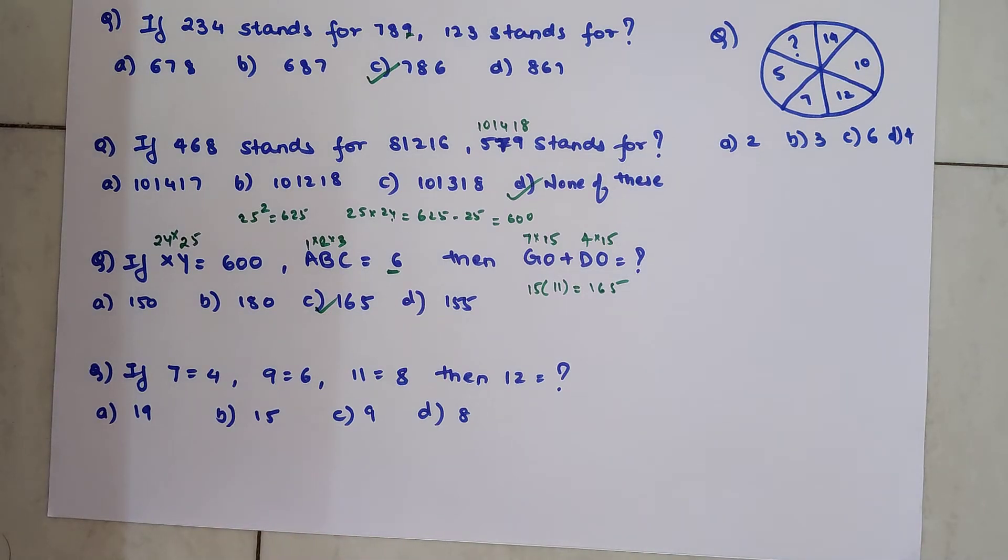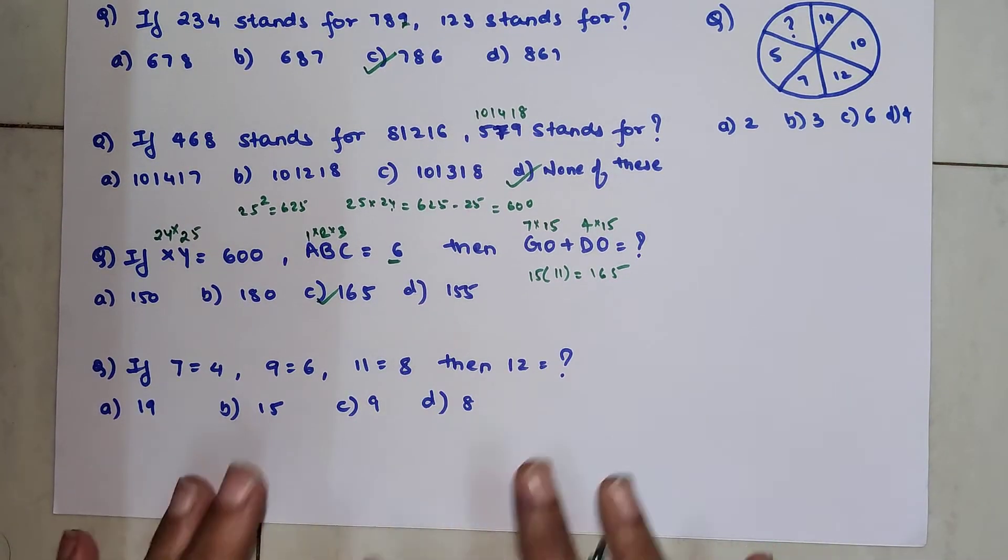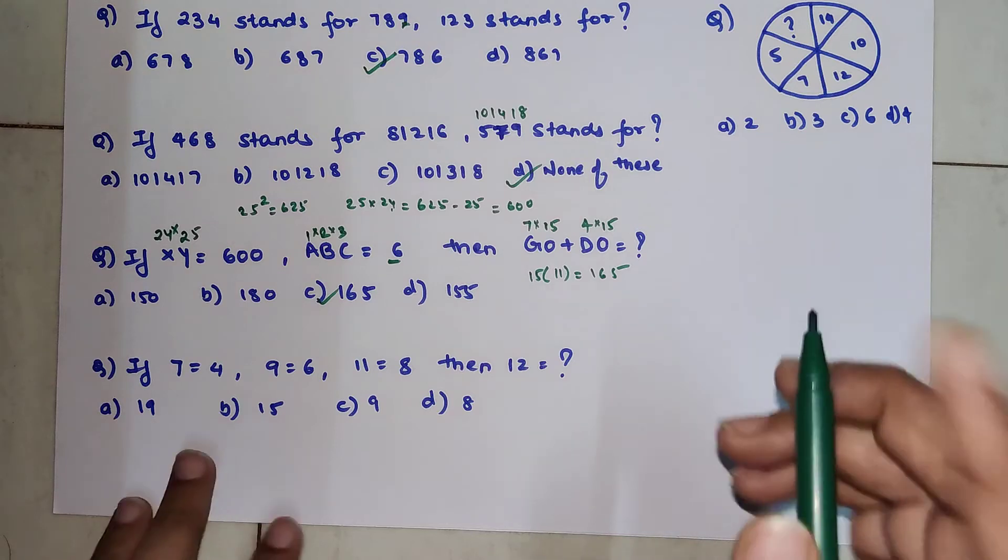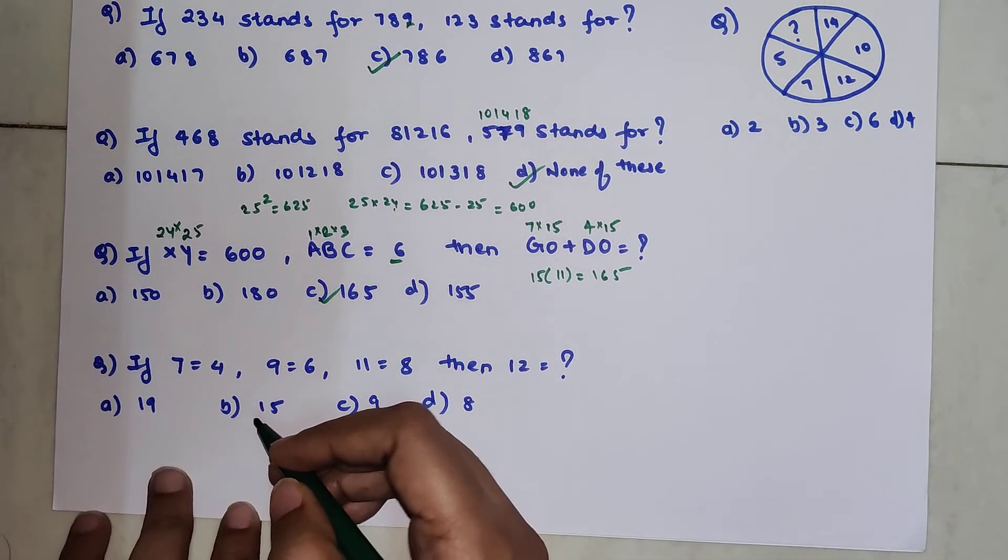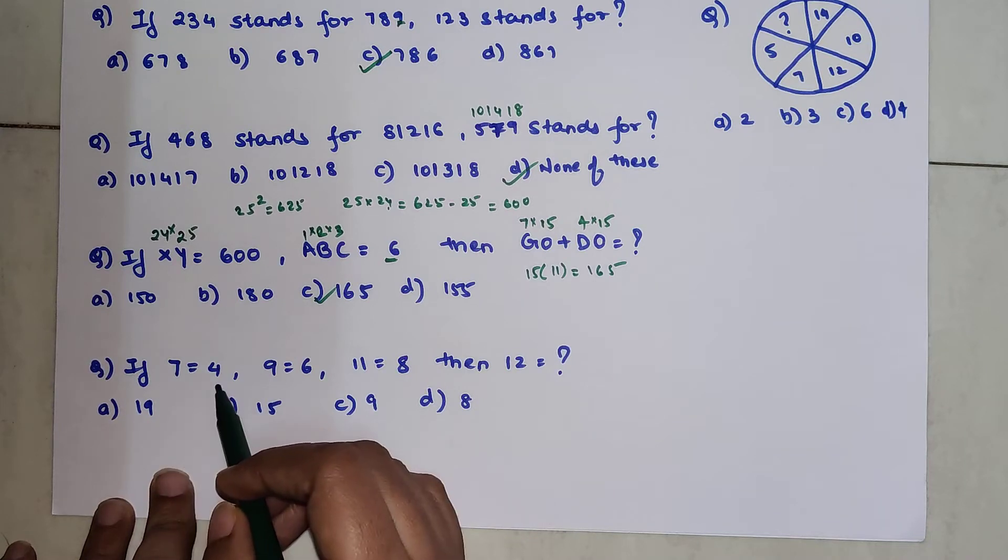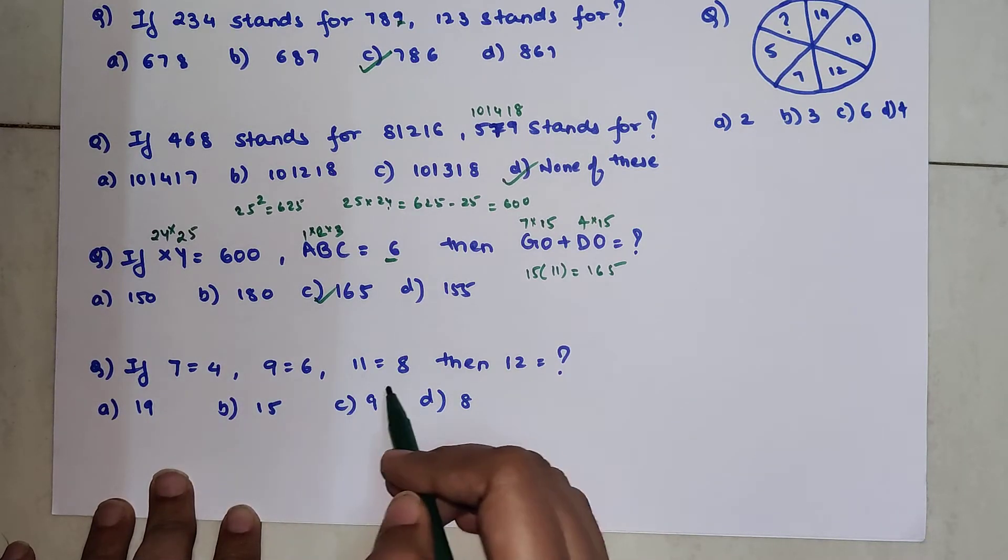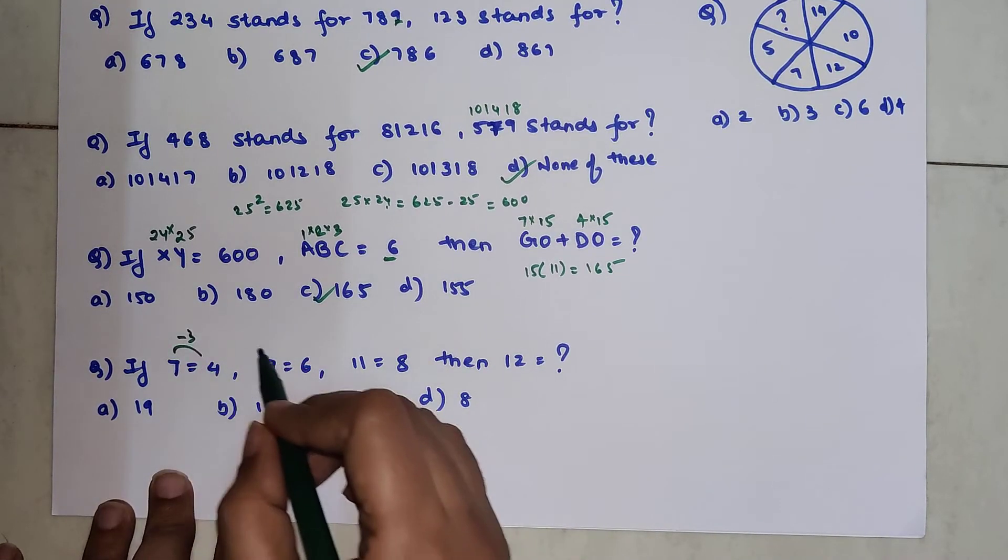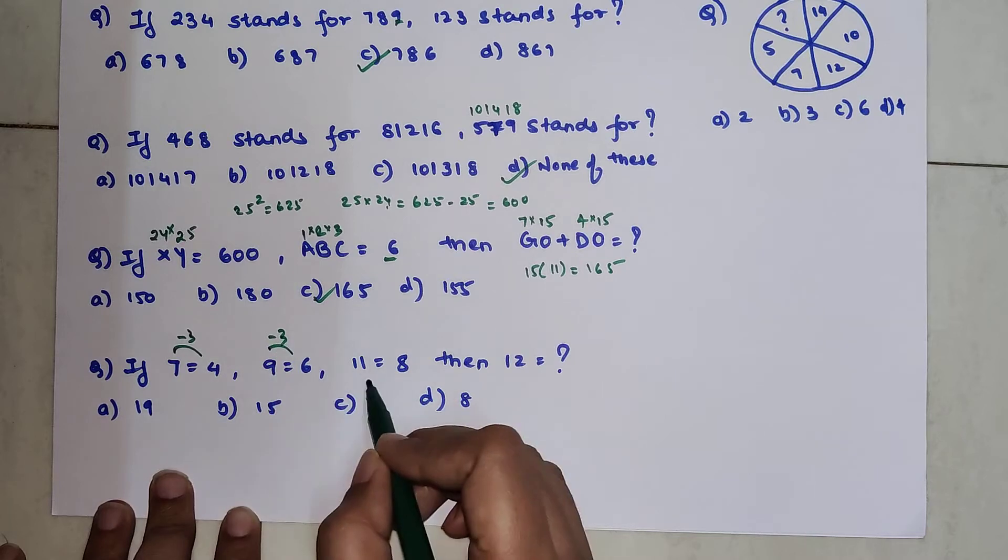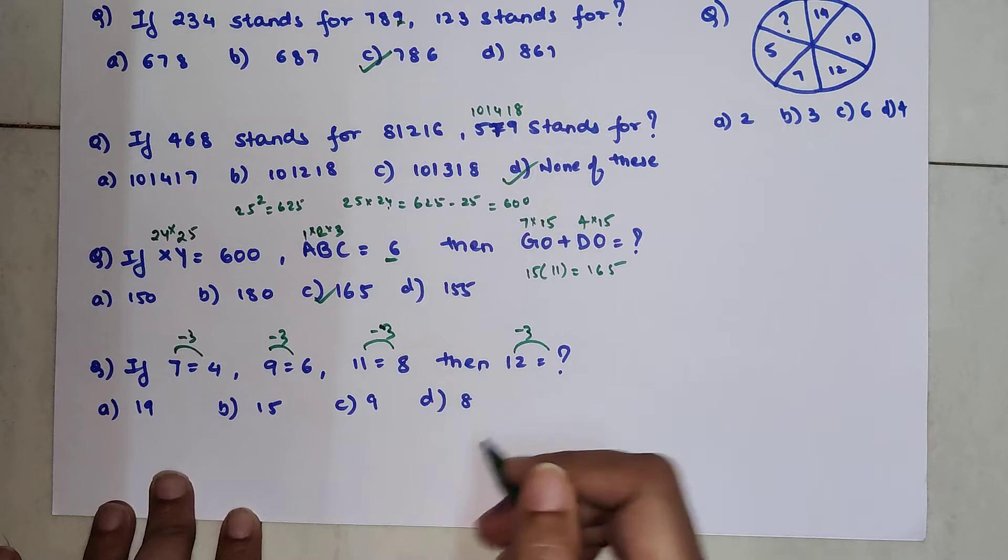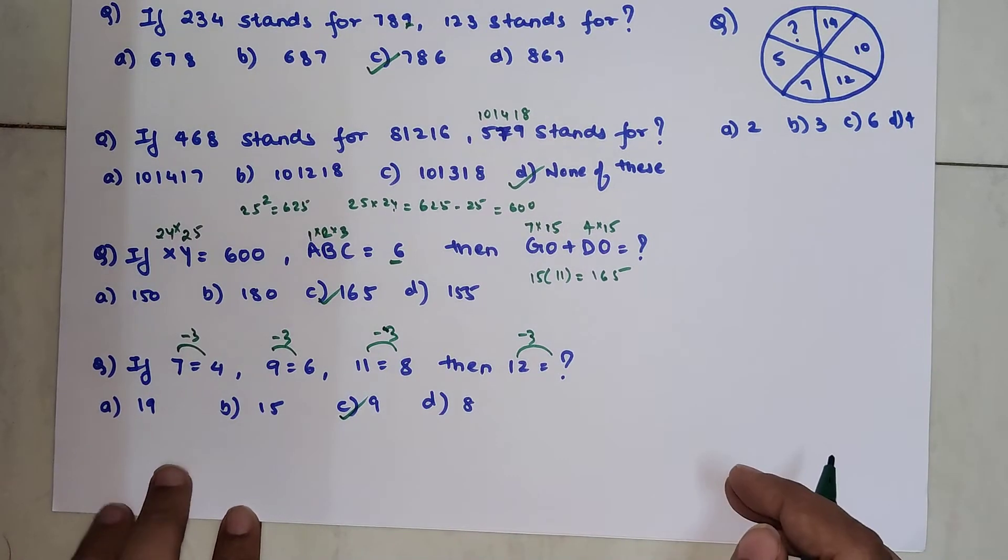So now the next one. This one is like super simple. If you want you can take a pause and solve this one. So here we have if 7 is equal to 4 then 9 is equal to 6 and 11 is equal to 8 then 12 will be equal to what? It is very simple. When you subtract 3 you get 4, you subtract 3 from 9 you get 6, you subtract 3 from 11 you get 8. So you subtract 3 from 12 you will get what? 9.